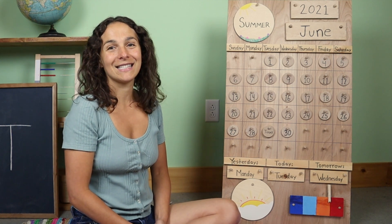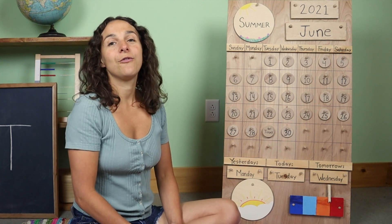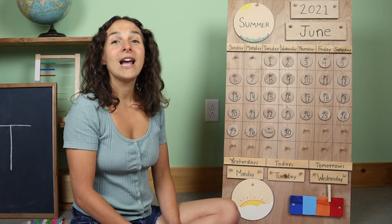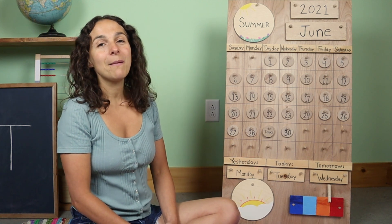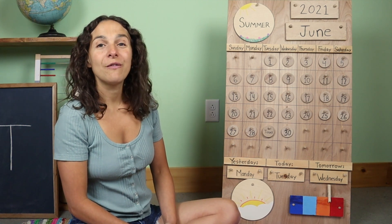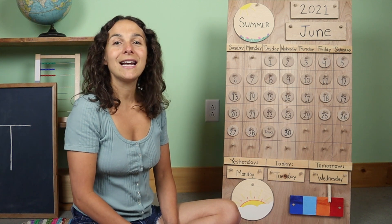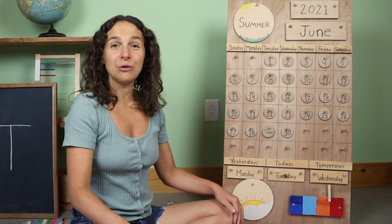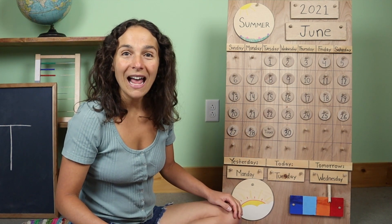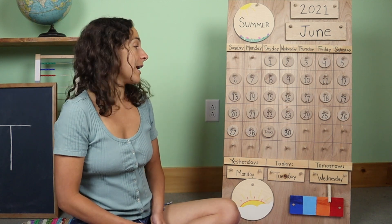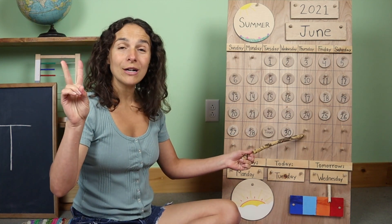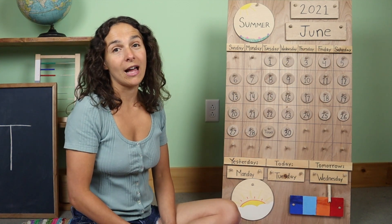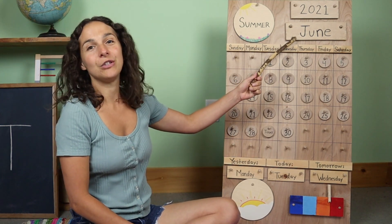It goes like this: January, February, March and April, May and June, July and August, September, October, November, December — 12 months in a year. Did you hear what month comes after the month of June? July. July will be here in just two more days. On Thursday, it will be the first day of July. But for now, it's still the month of June.